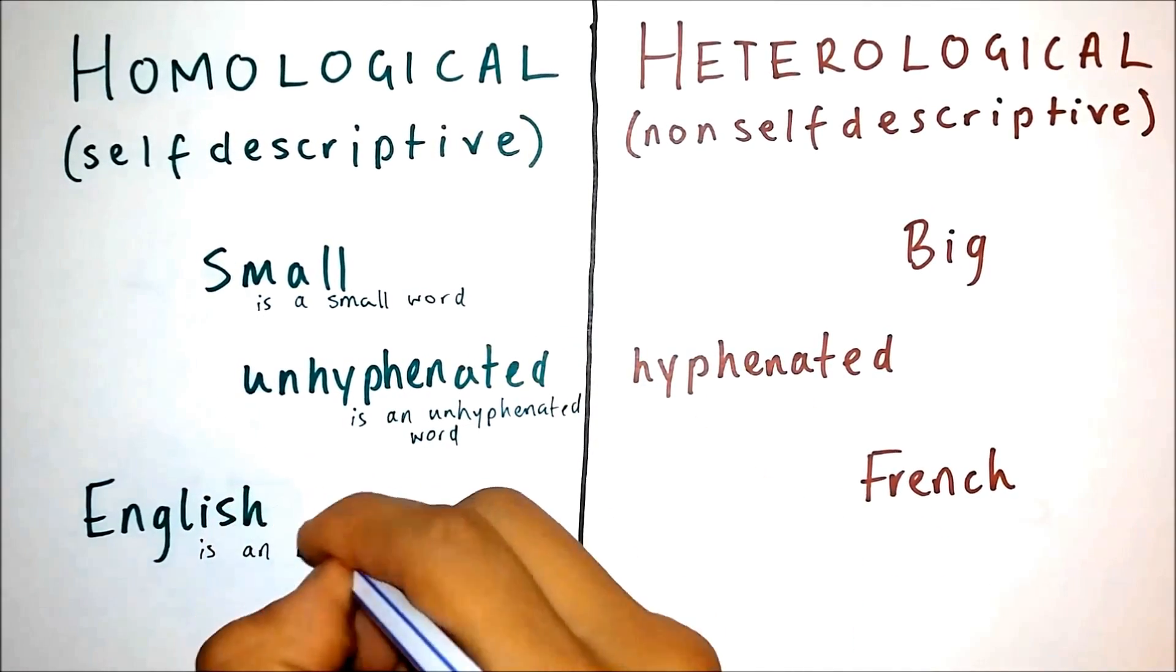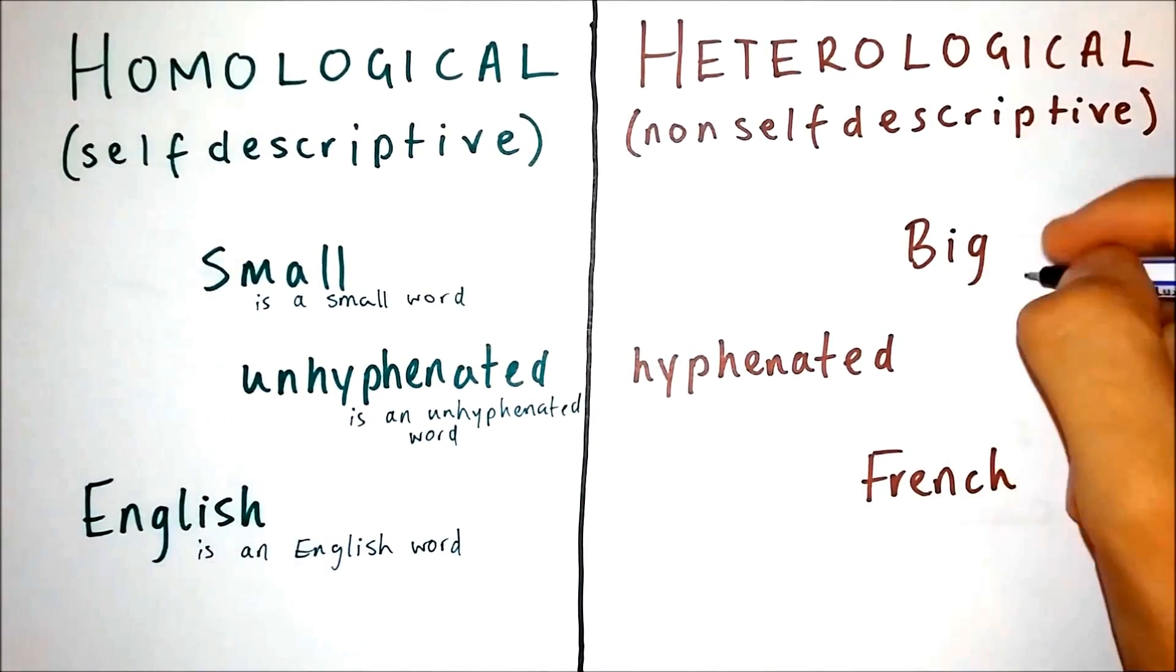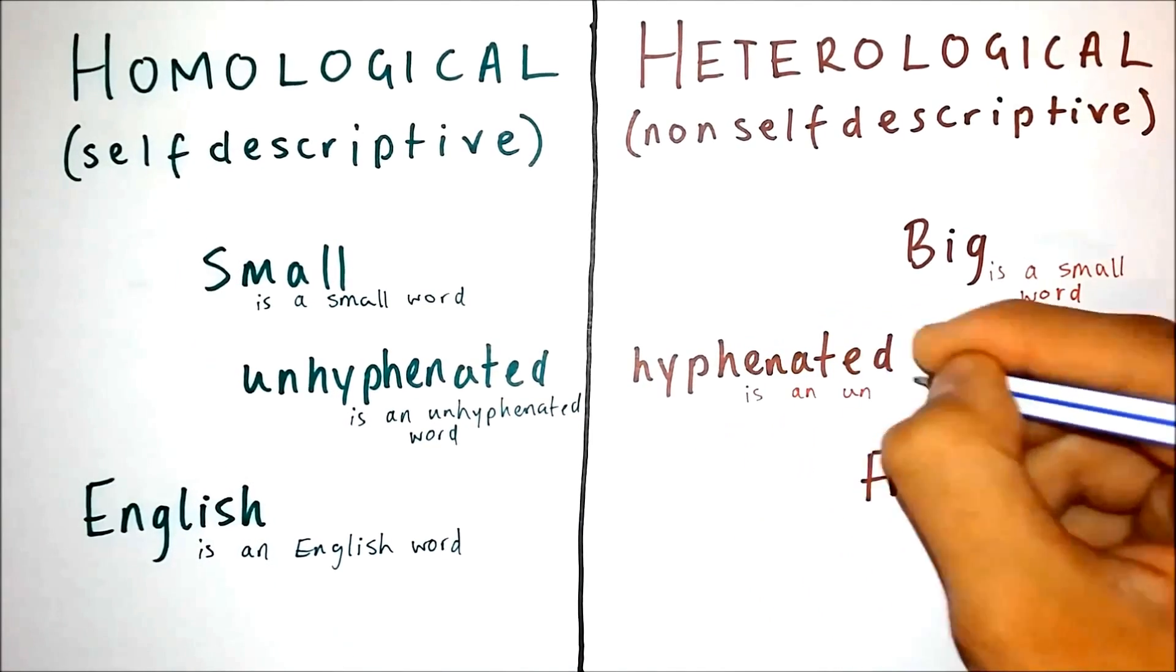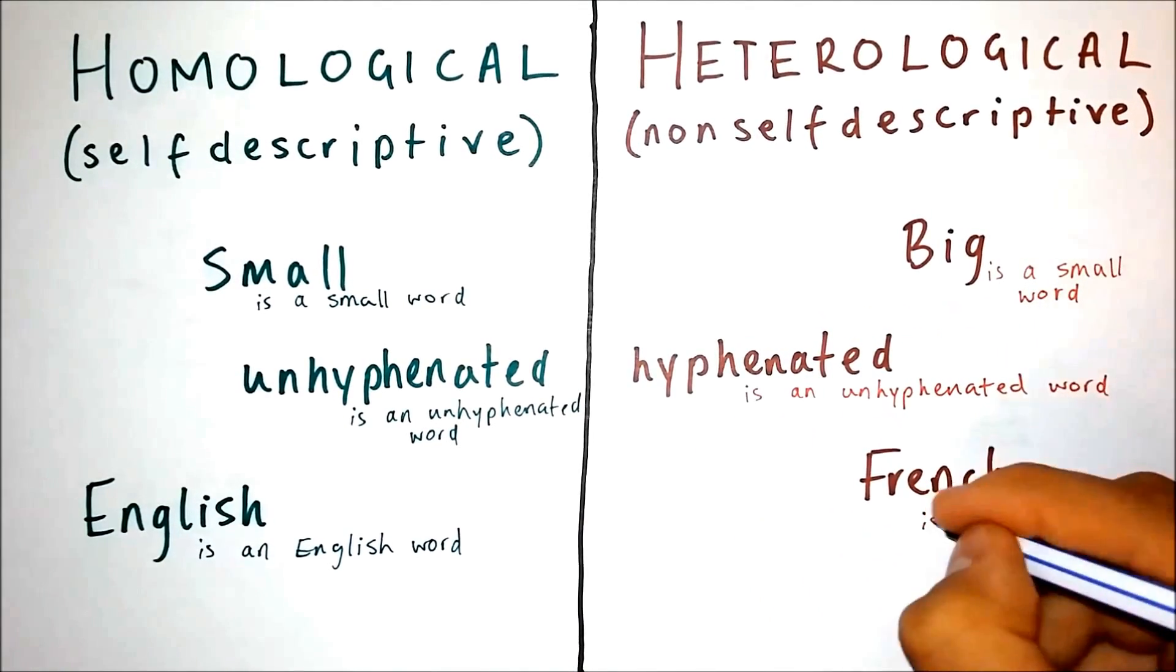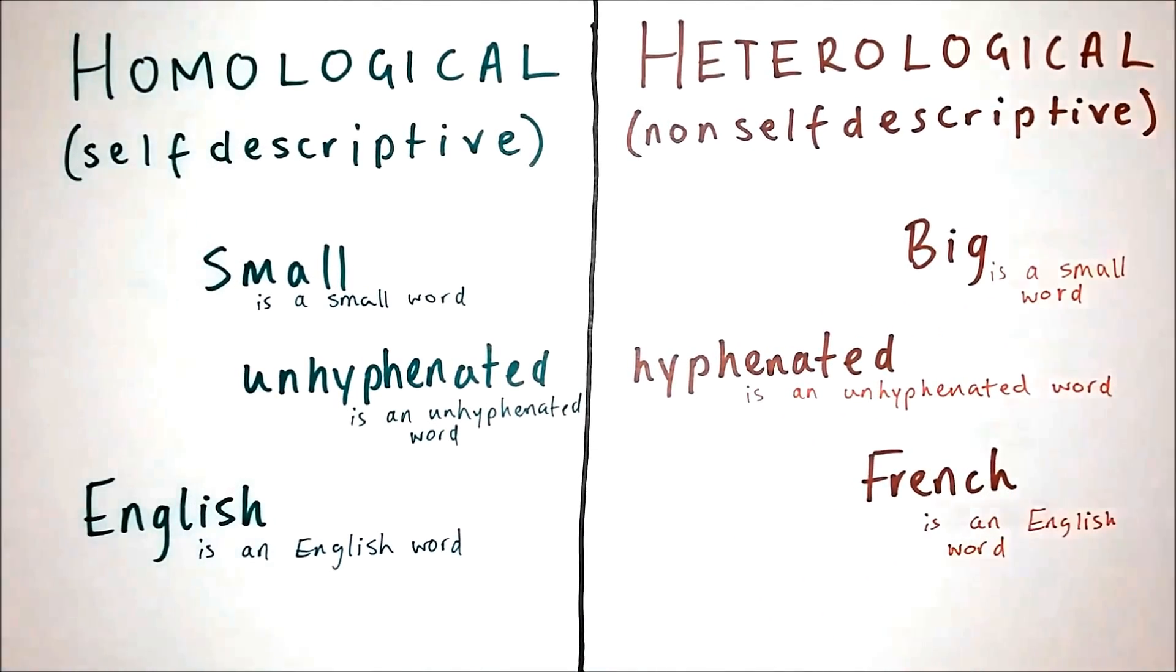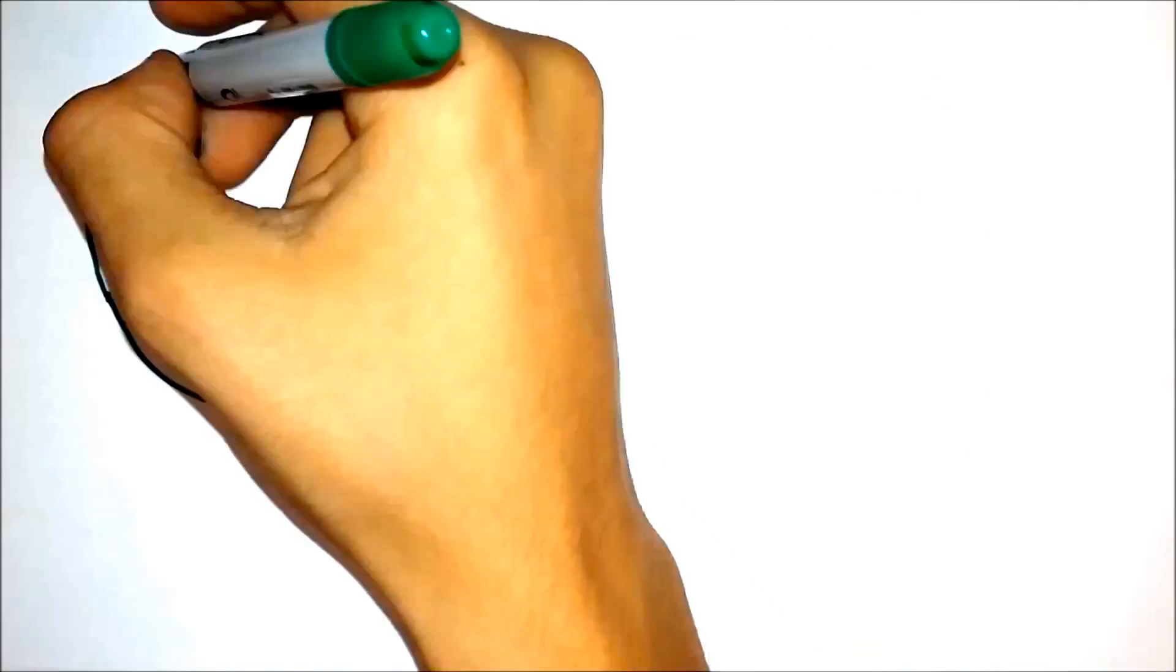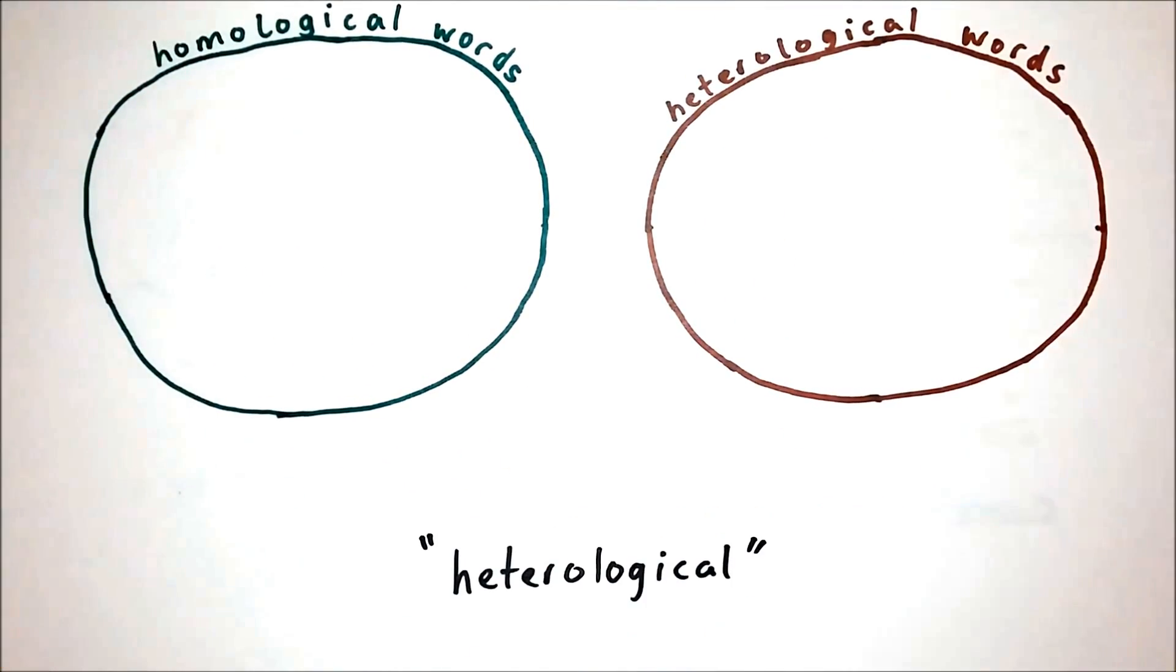As we've discussed, the law of excluded middle, that everything must either be or not be, necessitates that each and every word either describe itself or not describe itself. The paradox occurs when we attempt to categorize the word heterological.